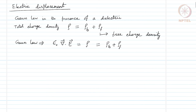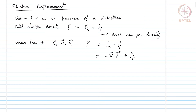Now, rho_f is the free charge density, meaning we have some control over it. Rho_b is the bound charge density where we have no control, and rho_b is also given as the negative divergence of the polarization. If we collect the divergence terms towards the left hand side, we get that the divergence of epsilon naught E plus the polarization vector gives us the free charge density.